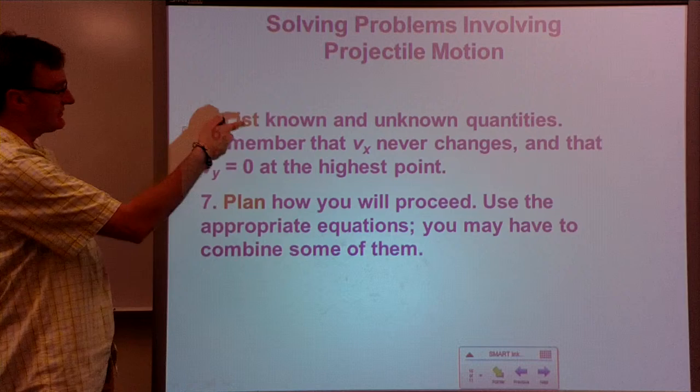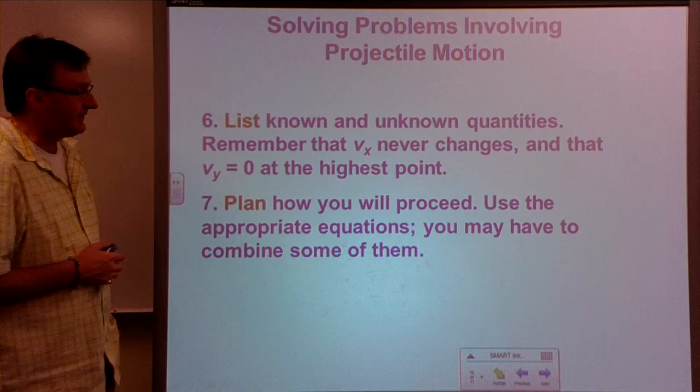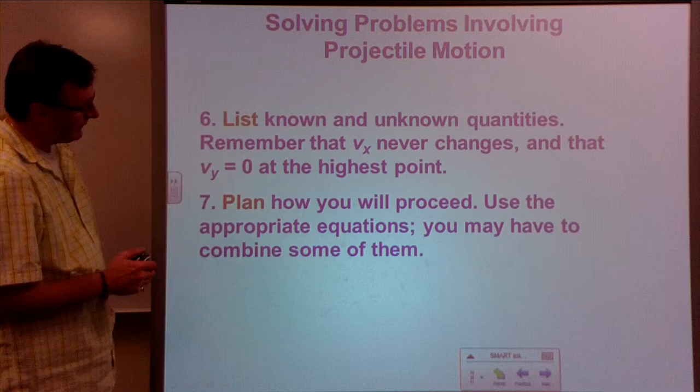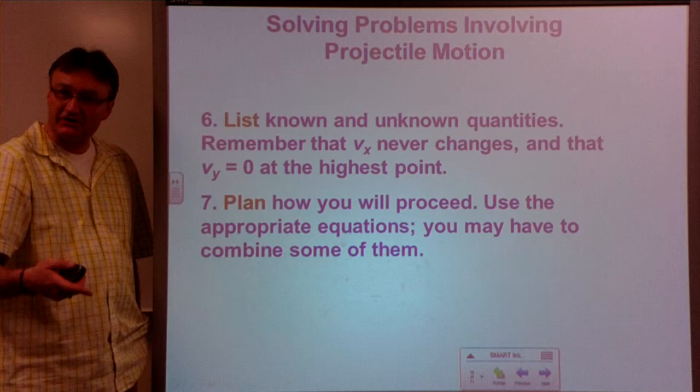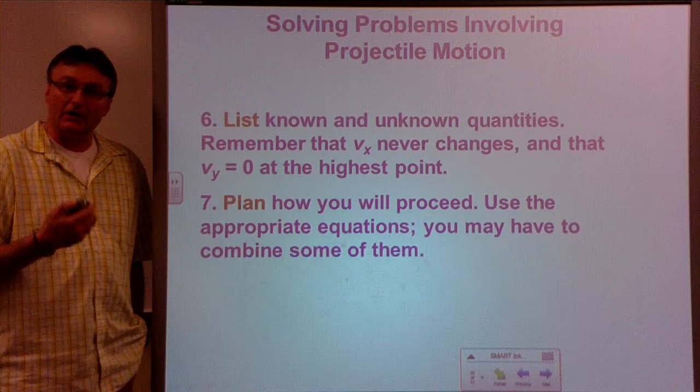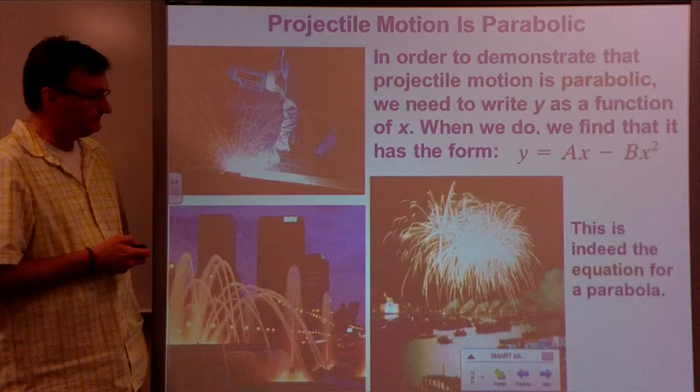List your known and unknown quantities. Remember some useful bits of information: the velocity in the x direction is always the same; the velocity in the y direction at the highest point of the trajectory is zero; and the velocity at launch and at impact will be the same magnitude as long as they are at the same height. Then plan how you proceed — check your equations, see what information you have, and choose equations to get there.